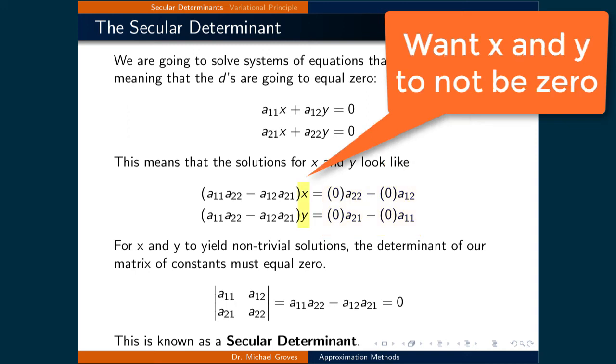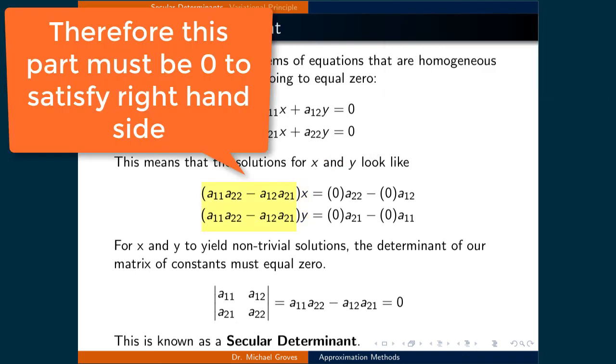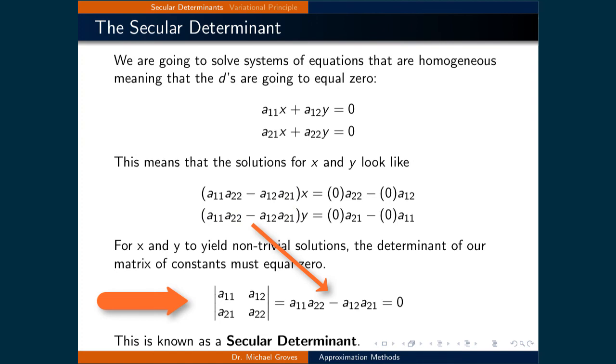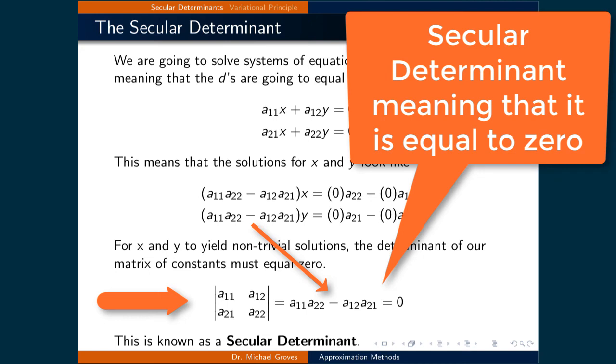The right-hand side of both solutions equals 0. For x and y to yield non-trivial solutions, meaning they aren't equal to 0 themselves, the determinant involving the constants must equal 0. In other words, a11a22 minus a12a21 equals 0. This type of determinant is known as a secular determinant.